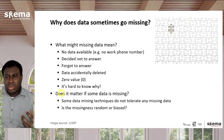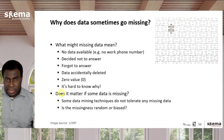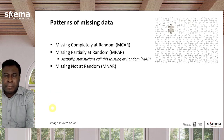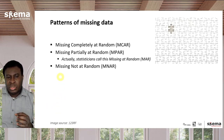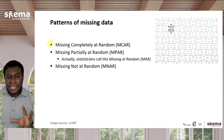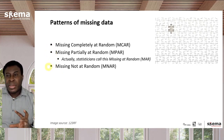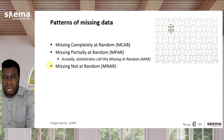One major issue when dealing with missing data is: is the missingness random or biased? Figuring this out is very important because it helps answer whether it really matters if the data is missing. When we talk about patterns of missing data, there are three main patterns statisticians discuss: data might be missing completely at random, missing partially at random (which statisticians call 'missing at random' or MAR), or missing not at random.